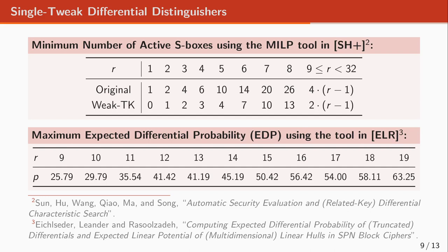We could find 19-round differentials with EDP of slightly better than 2^{-64}, but it was not possible to find any for 20 rounds or more.